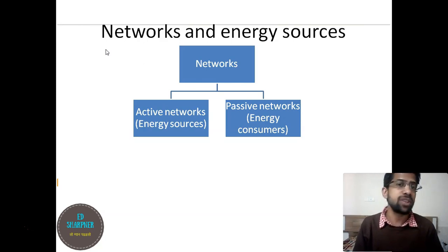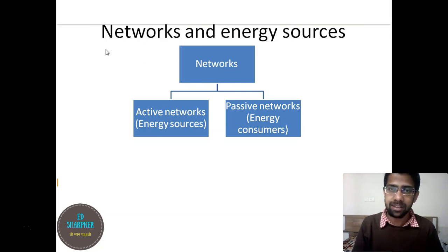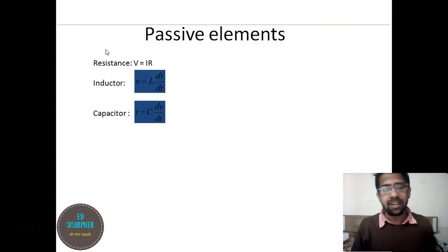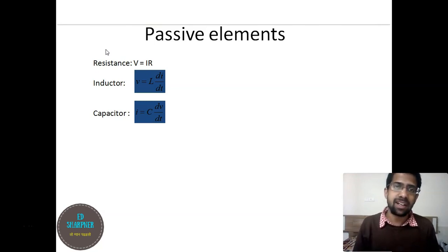A network fully made up of active elements is called an active network, whereas passive elements are energy consumers or energy storage elements such as resistance, inductor, or capacitor. A capacitor stores energy in the form of an electric field, resistance dissipates energy, and the inductor stores energy in the form of electromagnetic flux. According to Ohm's law, voltage and current are directly proportional, with the constant of proportionality being the resistance R.